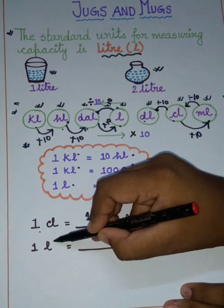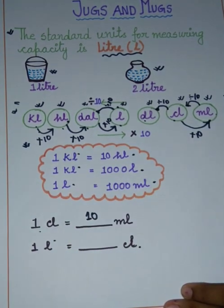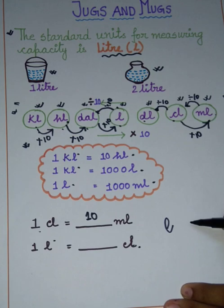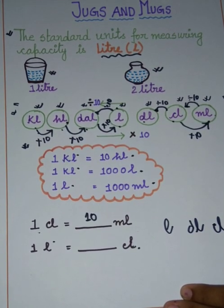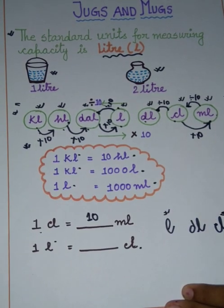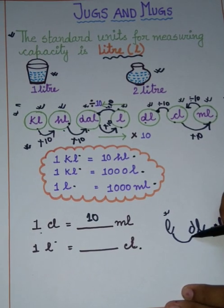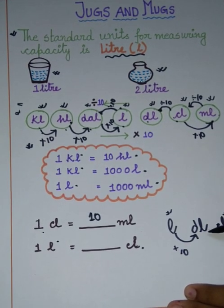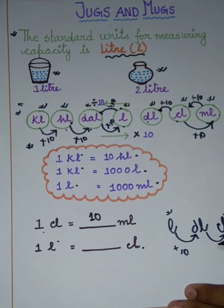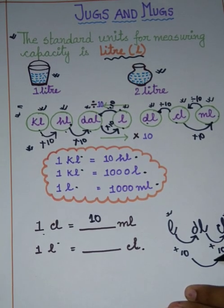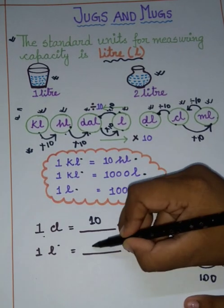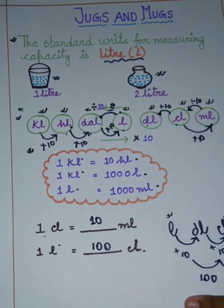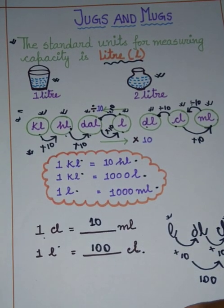Next, 1 litre equals how much centilitre? We know that after litre comes decilitre, then comes centilitre. So we move two steps: first from litre to decilitre, that means multiply by 10, then from decilitre to centilitre, that means multiply by 10 again. So 10 into 10 equals 100. Therefore, 1 litre equals 100 centilitre.